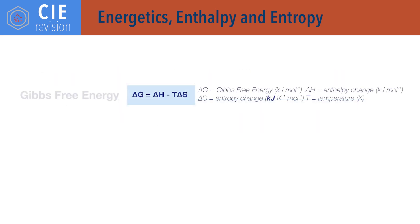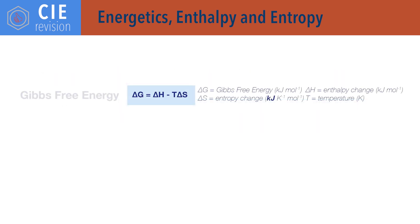Delta G equals delta H minus T delta S, where delta G is change in Gibbs free energy in kilojoules per mole, delta H is change in enthalpy in kilojoules per mole, T is temperature in kelvin, and delta S is change in entropy. Note that the units of entropy are usually in joules per kelvin per mole; however, in this equation, change in entropy must be given in kilojoules per kelvin per mole — divide delta S by 1000 to do this.